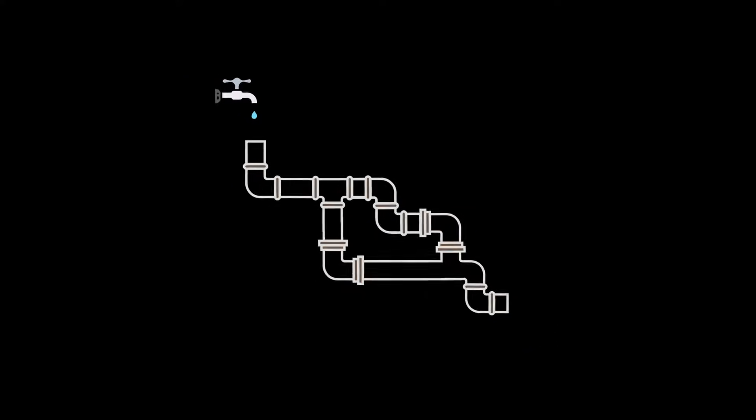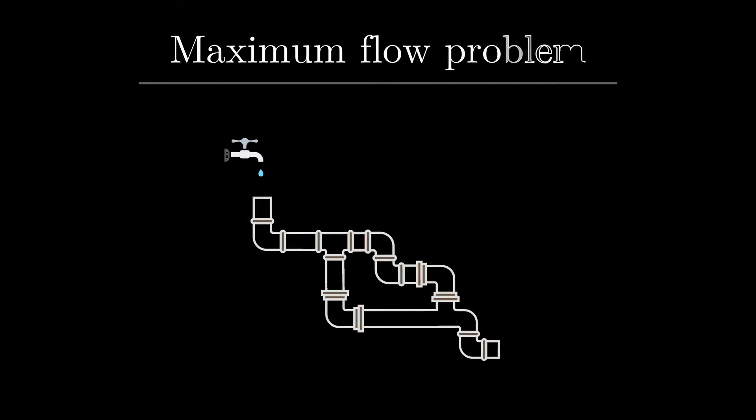Imagine we have a source of water that flows through some pipes until it reaches a sink. Each pipe has its capacity, which is the maximum amount of water that can flow through it. Can we compute the maximum flow, which is the maximum amount of water that can flow from the source?